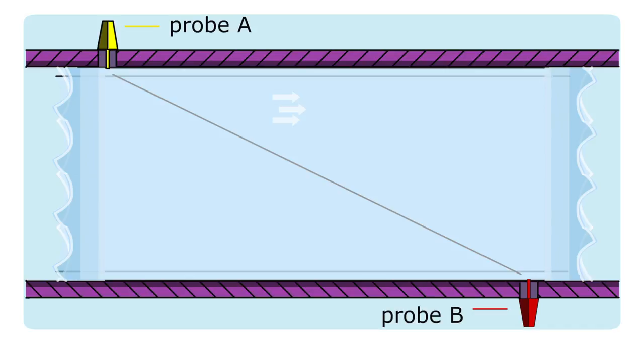We place two probes on this pipe, with a specific distance between them. Each probe is capable of emitting and receiving ultrasound signals. This pair of probes forms a code.